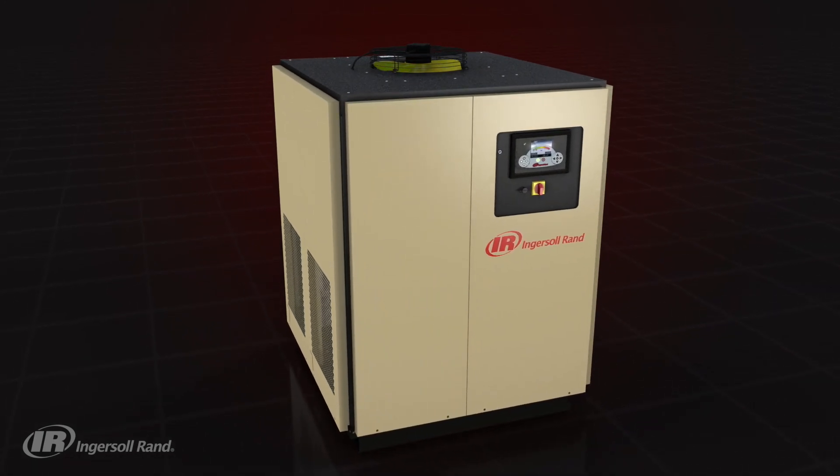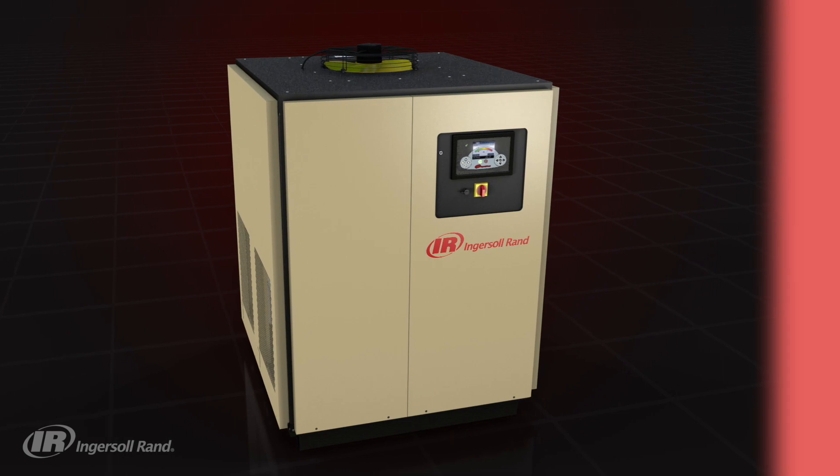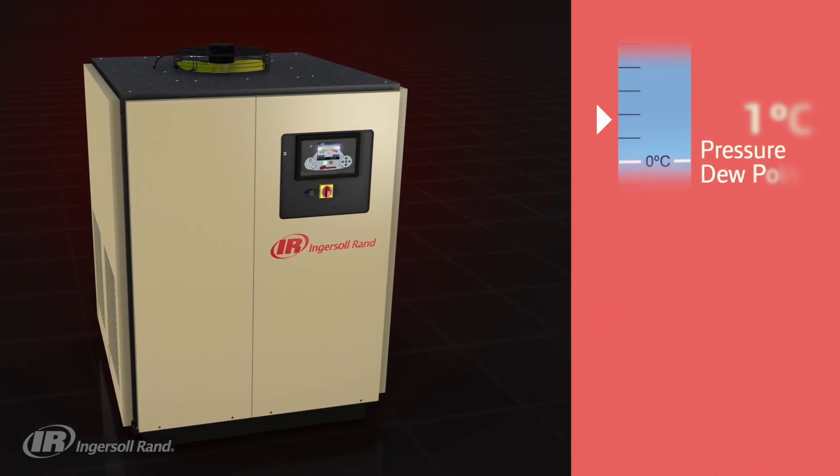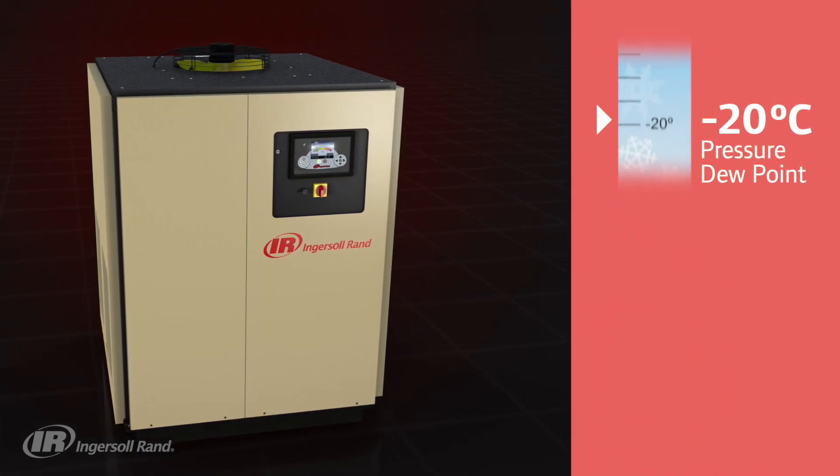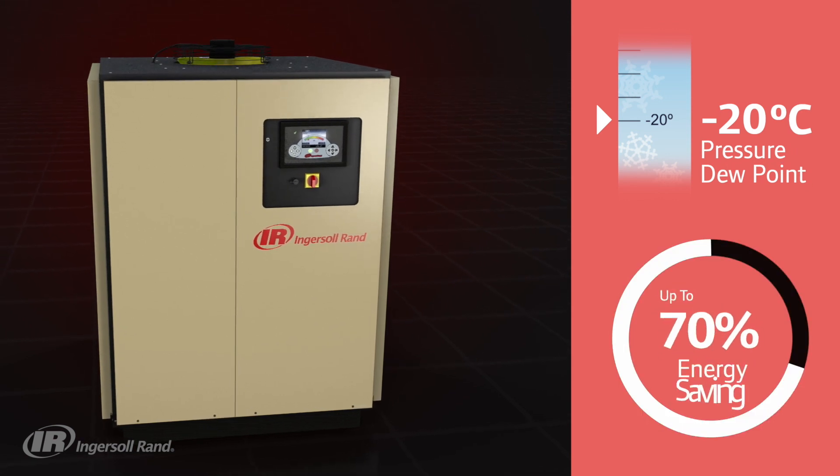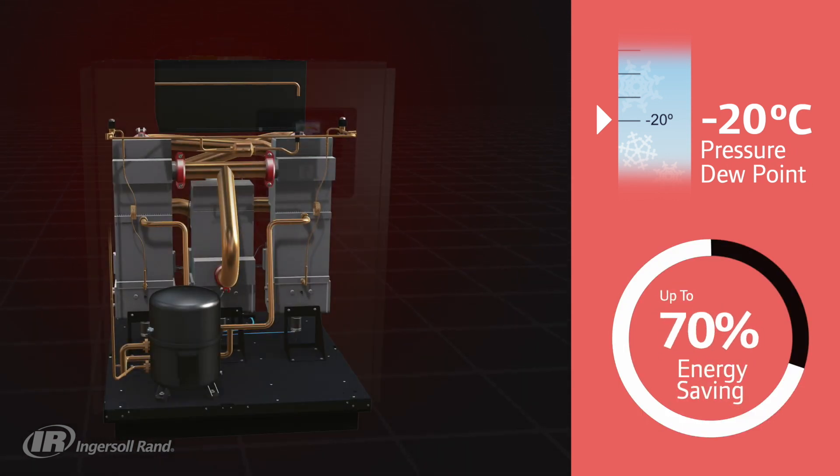With a design focus on energy efficiency, this sub-freezing dryer combines a pressure dew point of minus 20 degrees Celsius with up to a 70% energy saving when compared with equivalent desiccant dryers.